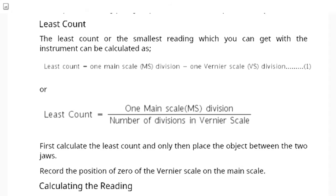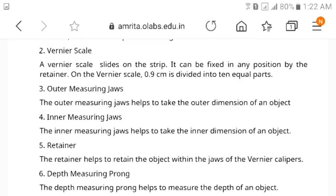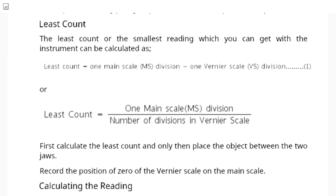The reading on main scale is called main scale reading or MSR. Least count: the least measurement that can be taken by an instrument is called least count of that instrument. The least count of vernier caliper is the value of one main scale division divided by number of divisions on vernier scale.